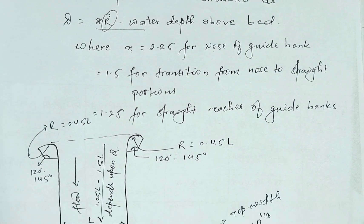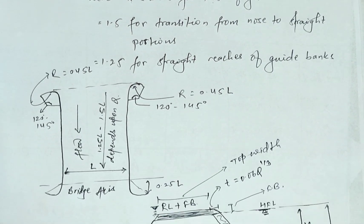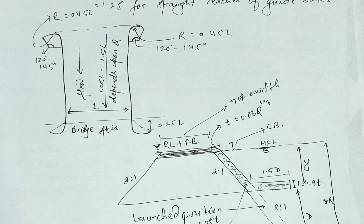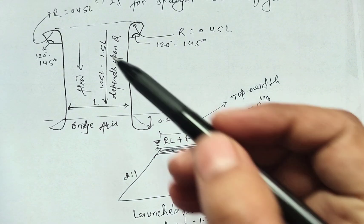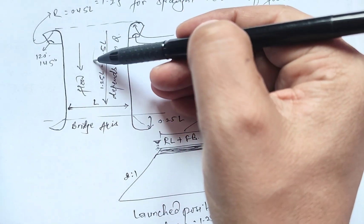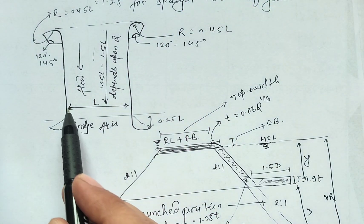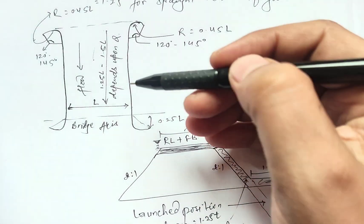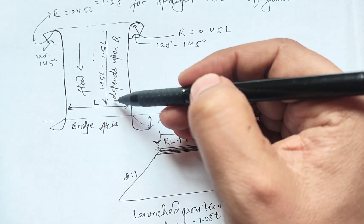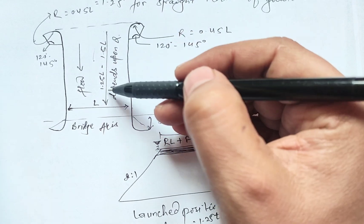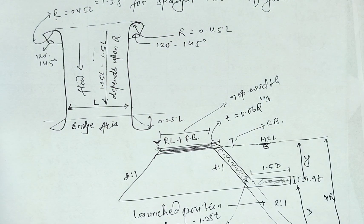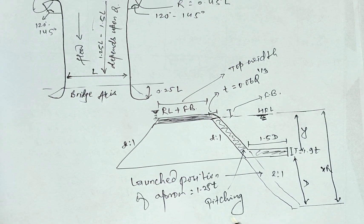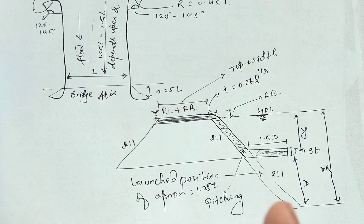After all these steps, the plan and profile of the river training structure can be formed. This is the plan where water flows in from one direction; this is the waterway length, this is the guide bank length depending on Q, this is the radius R, and this is the cross section of the river training structure.